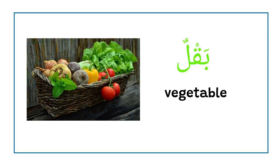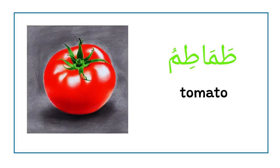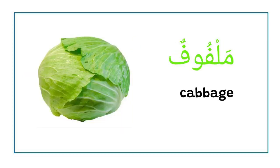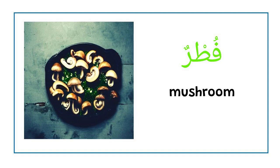Baql — vegetable. Khudrah — vegetable. Tomatim — tomato. Malfoof — cabbage. Jazar — carrot. Futur — mushroom.